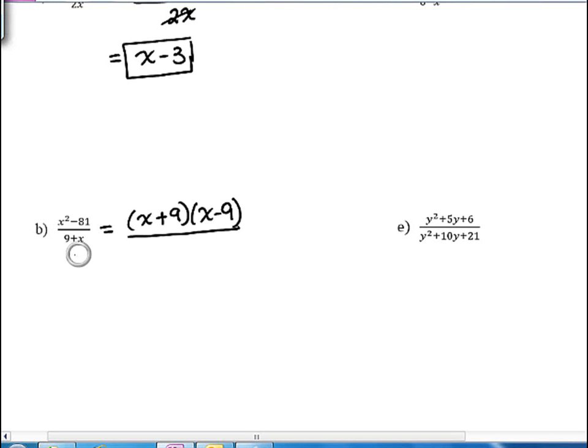The denominator 9 plus x can be rewritten. You can write the x term first, it's a positive x, so that's x, and then it's a positive 9, so that would be plus 9. And so we can cancel the x plus 9s, and we would be left with x minus 9.